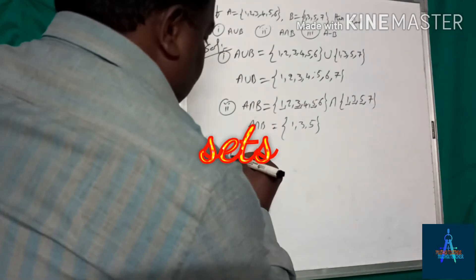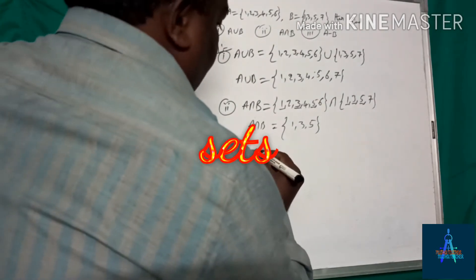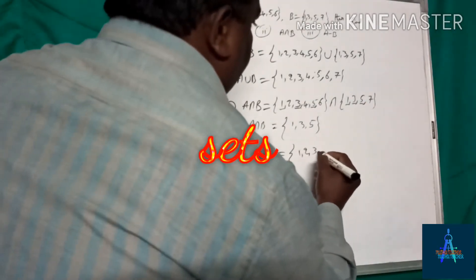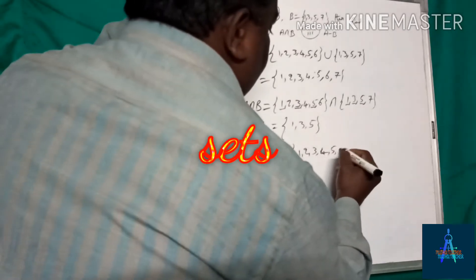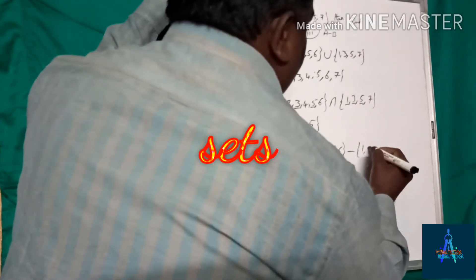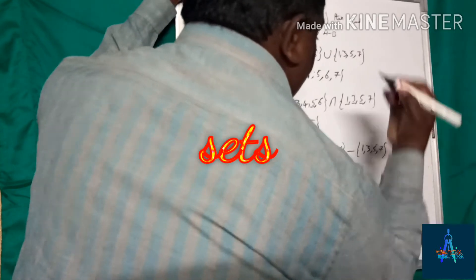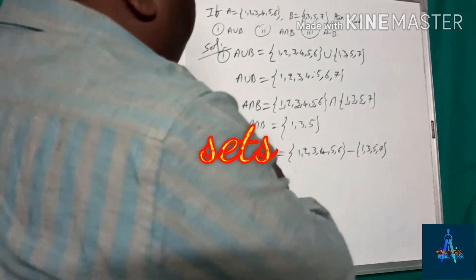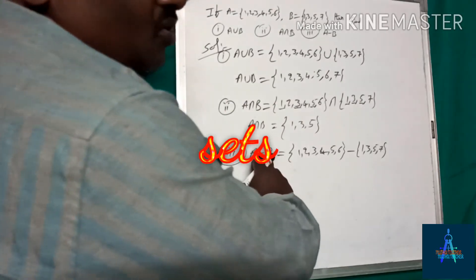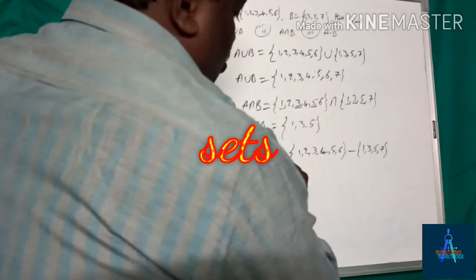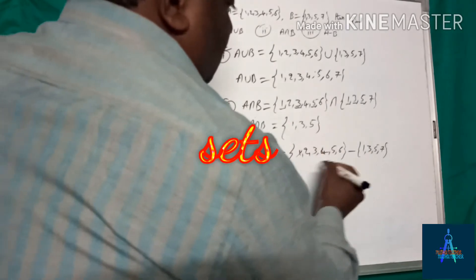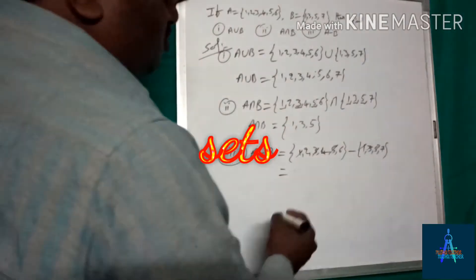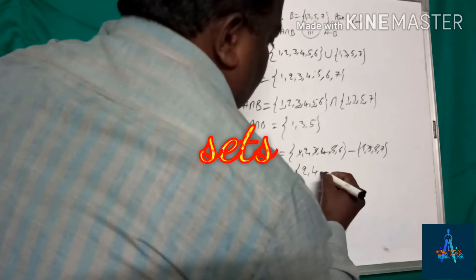The third one is A minus B. So A is {1, 2, 3, 4, 5, 6} minus B is {1, 3, 5, 7}. A minus B means all the elements of A but not in B. The common elements 1, 3, and 5 are removed, so remaining are 2, 4, 6. This is A minus B.